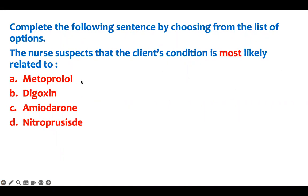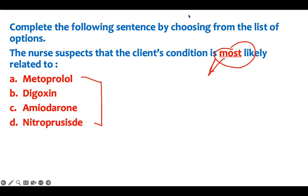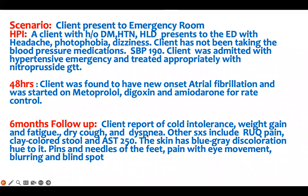The options are: hypertension, metoprolol, digoxin, amiodarone, and nitroprusside. This is a priority question because it says 'most likely.' Why is it most likely related to any of them? You go back and look at the sentences and see whether these symptoms are consistent with each option.